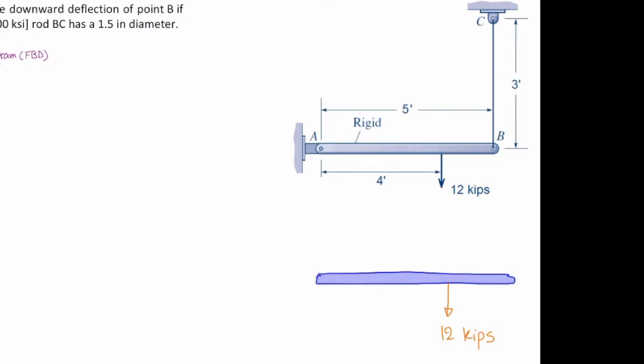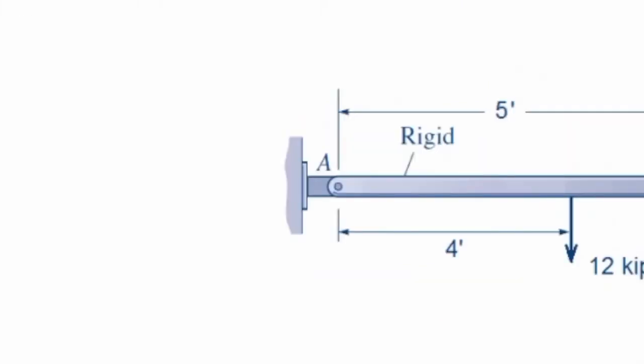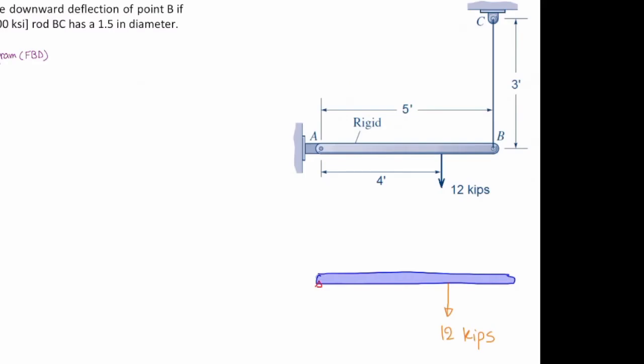When I release this from this part, how many unknown forces do I have there? When I remove a pin support, I will put two unknown forces there. One in the x direction, another one in the y direction.